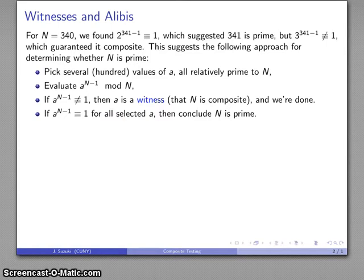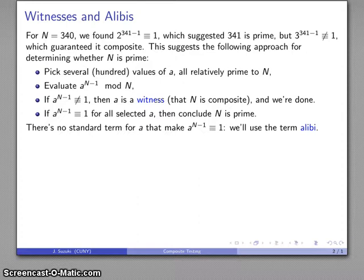There's no standard term for a value that makes the congruence equal to 1, but by analogy—we have witnesses that it's composite—we have alibis that the number is prime. The idea is we either have a witness saying this number is composite, or alibis saying we're pretty sure the number is prime.